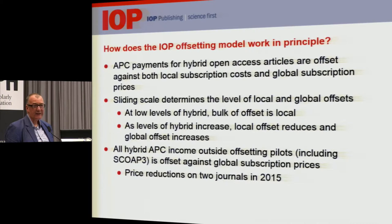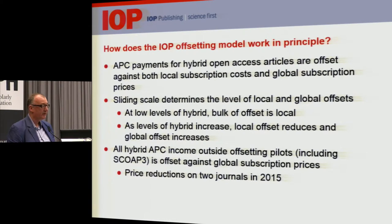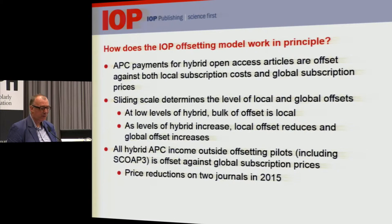Outside our offsetting pilots and outside Scope 3, we offset all other APC income globally — we take APC income into account when setting standard subscription prices for our journals. In fact, this year we reduced the prices of two journals, including Biophysical Journal, because of the high proportion of hybrid in them.